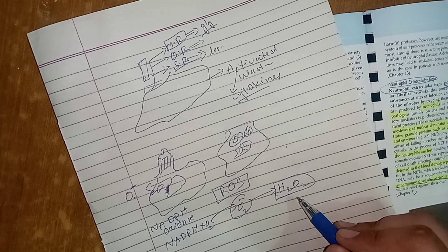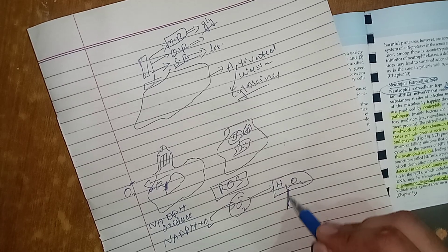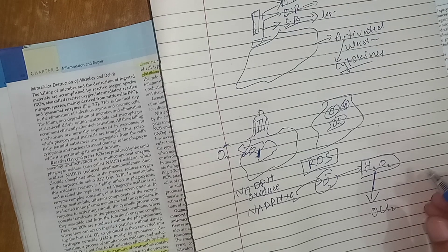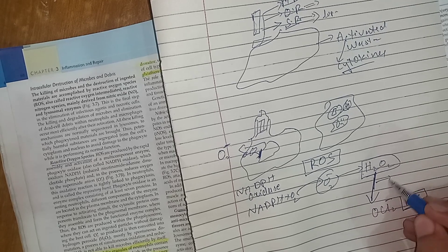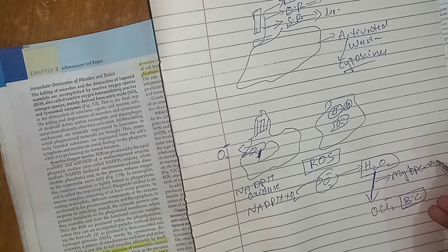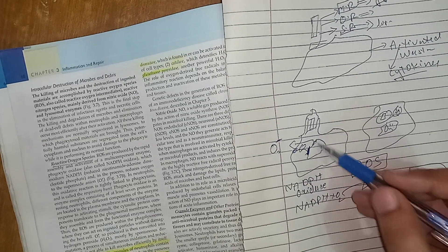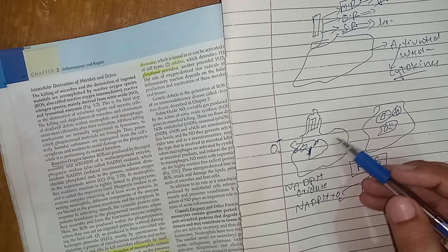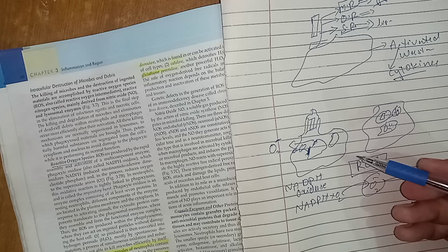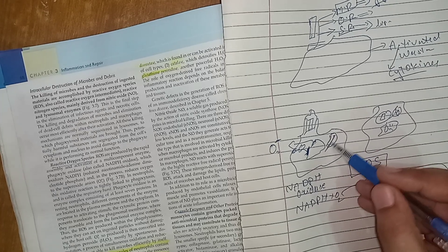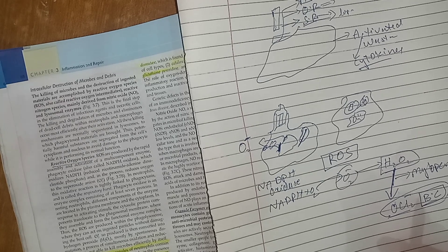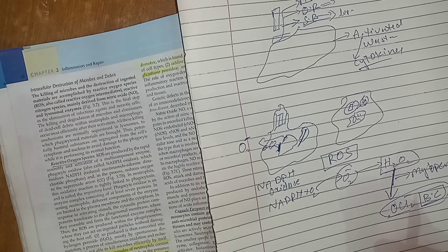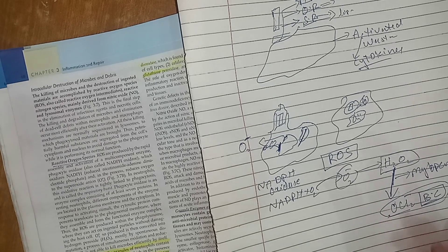Superoxide spontaneously converts into hydrogen peroxide H2O2, which has less bactericidal activity on its own. H2O2 is then converted to hypochlorite (OCl⁻) in the presence of myeloperoxidase. Myeloperoxidase is released from azurophilic granules inside neutrophils. Hypochlorite is extremely bactericidal and helps kill bacteria. This H2O2-myeloperoxidase-halide system is the most efficient bactericidal mechanism of the cell.